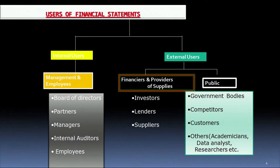External users are those who are in the macro environment, outside the business unit, but they still need important information about the income statement and balance sheet. These are your financiers and investors who have lent you credit, who have supplied raw materials and intermediate goods on credit. Along with them is the public — government bodies, competitors who are always looking to capture your markets, customers ready to switch to competitors, and of course researchers, data analysts, and external auditors.